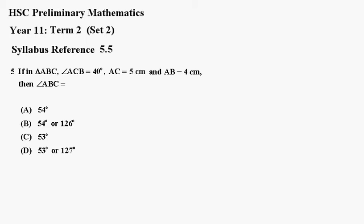Number 5. If in triangle ABC, angle ACB equals 40 degrees, AC equals 5 centimeters, and AB equals 4 centimeters, then angle ABC is A, B, C, or D.